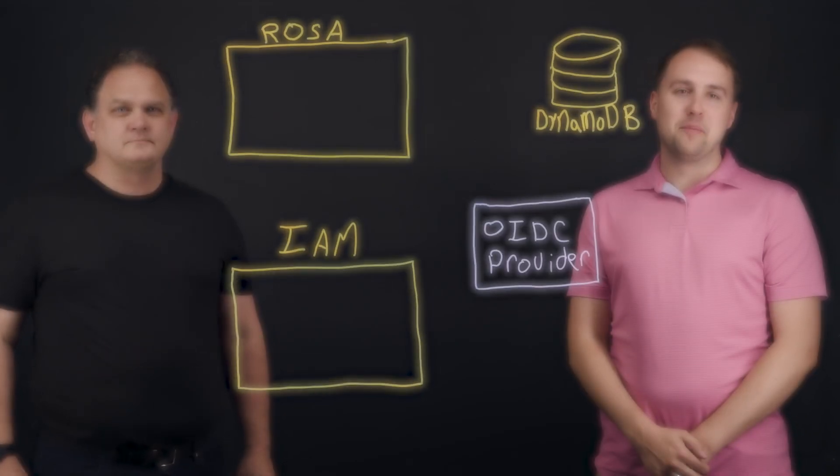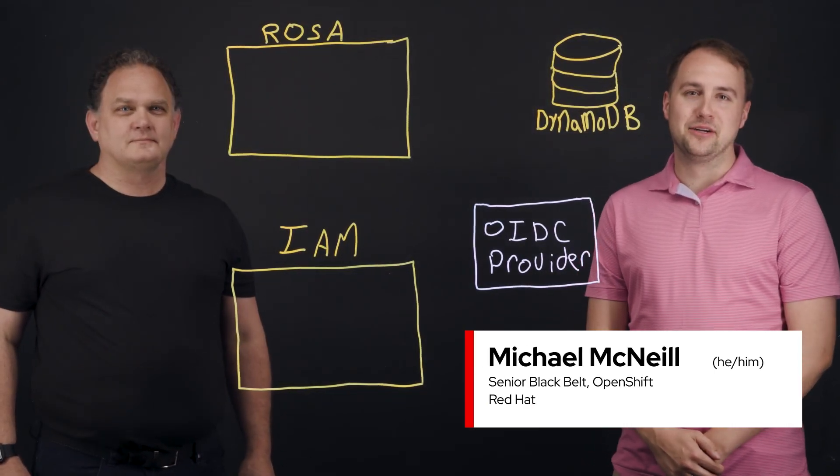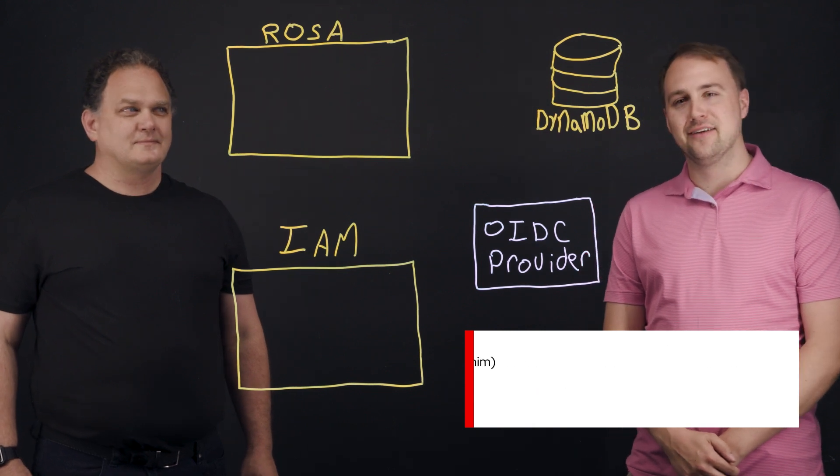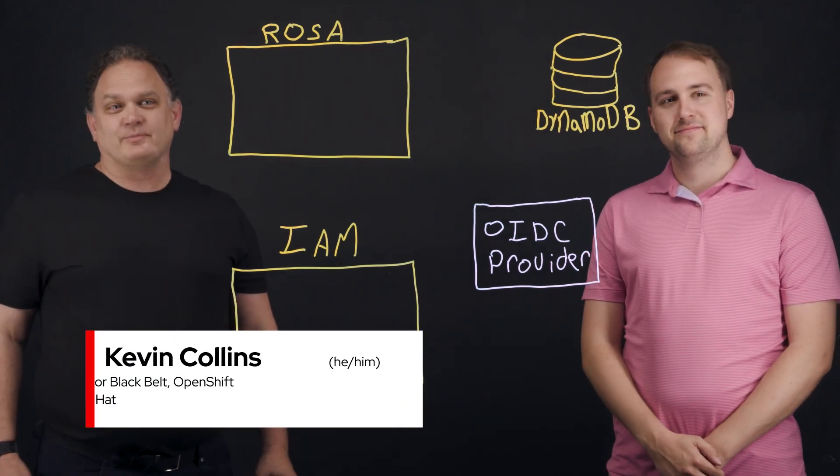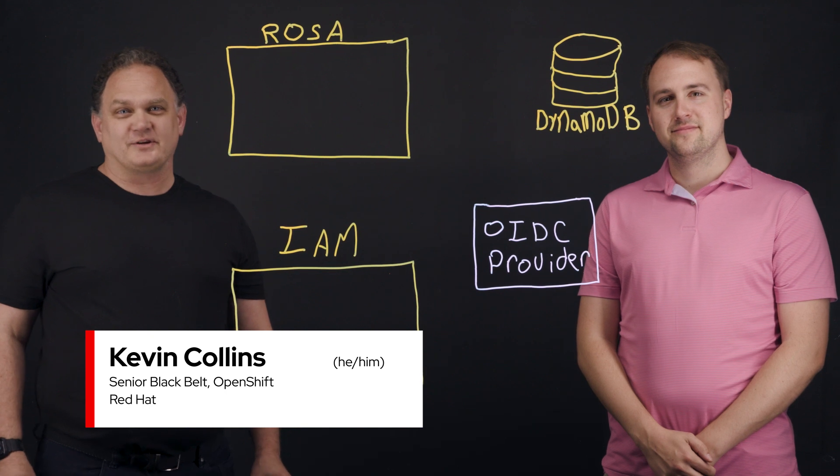Hi, I'm Michael McNeil, and I'm a member of our Managed OpenShift Black Belt team here at Red Hat. I'm here with my colleague, Kevin. Hi, I'm Kevin Collins, also a member of the Managed OpenShift Black Belt team.